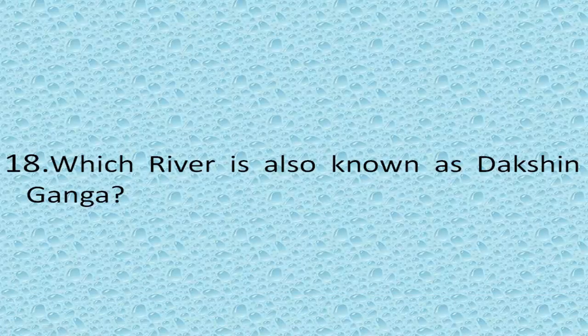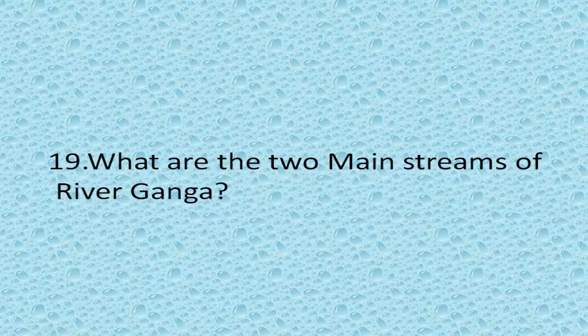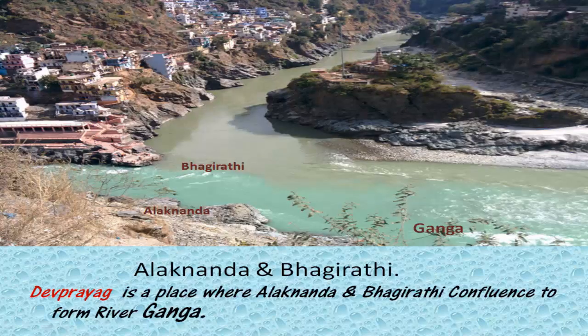Which river is also known as Dakshin Ganga? River Godavari. Godavari is known as the Ganga of South India due to its length and the large area which it drains. The river Godavari is also known as Dakshin Ganga. What are the two main streams of river Ganga? Alaknanda and Bhagirathi.